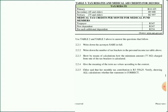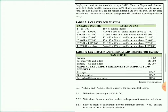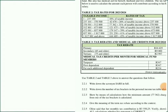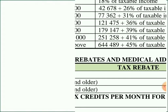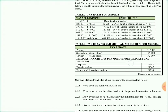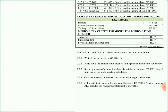Question 2.2.2: write down the number of tax brackets in the personal income tax table above. You're going to be checking out the tax brackets here — how many tax brackets are in the taxable income table? If you count them, there are seven tax brackets.